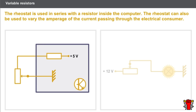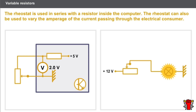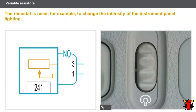The rheostat comprises a resistive strip with one connection and operates according to the same principle as the potentiometer. The rheostat is used in series with a resistor inside the computer. The computer measures the voltage between the cursor and the end of the resistive strip, which depends on the position of the cursor. The rheostat can also be used to vary the amperage of the current passing through the electrical consumer — for example, to change the intensity of the instrument panel lighting.